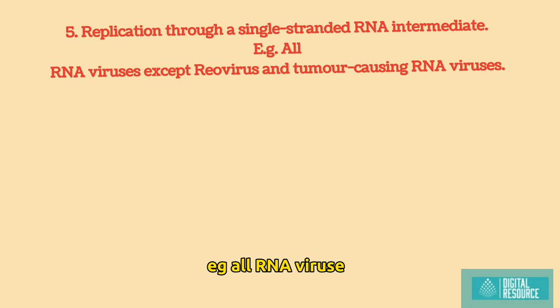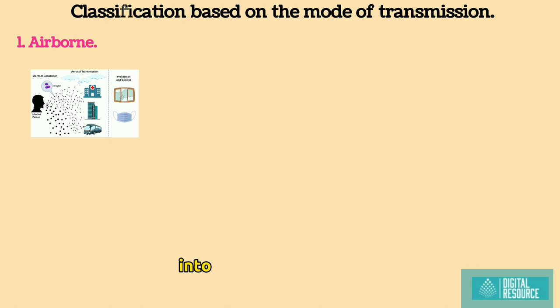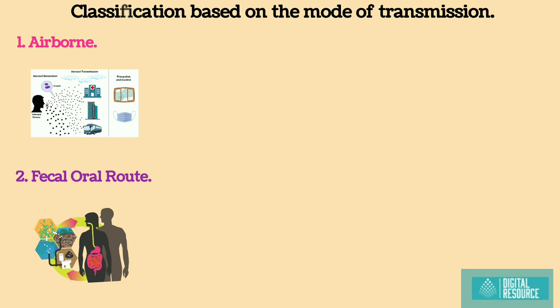Classification based on mode of transmission. 1. Airborne infections: transmission of the virus through the air into the respiratory tract, e.g. swine flu and rhinovirus. 2. Fecal-oral route: transmission of the virus through contaminated water or food, e.g. hepatitis A virus, poliovirus, rotavirus.